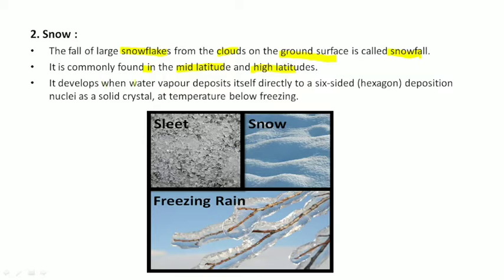It develops when water vapor deposits itself directly to a six-sided hexagon deposition nuclei as a solid crystal where the temperature is below freezing point. Snowfall occurs when the freezing level is so close to the ground level. These are like the ice crystals reach the ground without being melted as a solid.